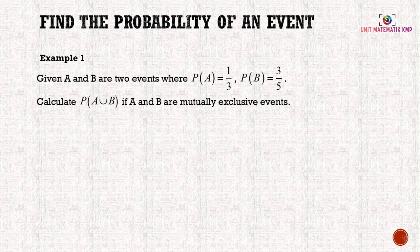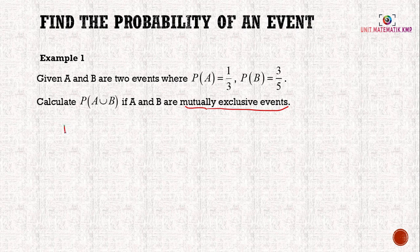Example 1: Given A and B are 2 events where P(A) = 1/3 and P(B) = 3/5. Calculate P(A∪B) if A and B are mutually exclusive events. Since A and B are mutually exclusive events, the formula is P(A∪B) = P(A) + P(B).